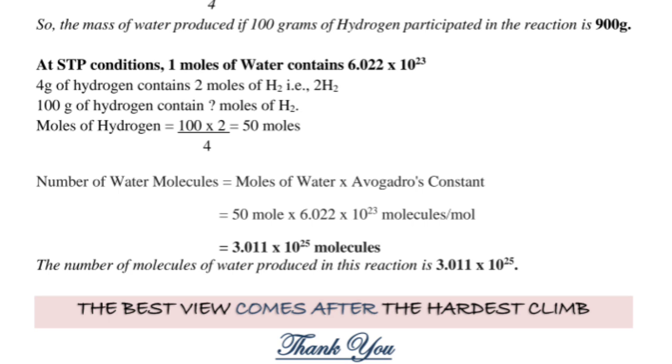At STP conditions, 1 mole of water contains 6.022 times 10 to the power 23. 4 grams of hydrogen contains 2 moles of H2, i.e., 2H2. 100 grams of hydrogen contain moles of H2. Moles of hydrogen equals 100 times 2 divided by 4 equals 50 moles. Number of water molecules equals moles of water times Avogadro's constant equals 50 moles times 6.022 times 10 to the power 23 molecules per mole equals 3.011 times 10 to the power 25 molecules. The number of molecules of water produced in this reaction is 3.011 times 10 to the power 25.